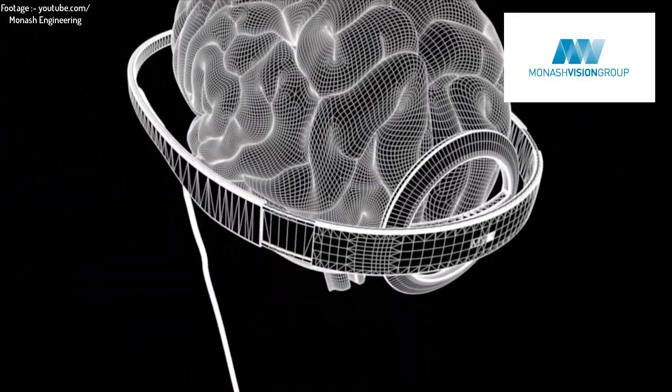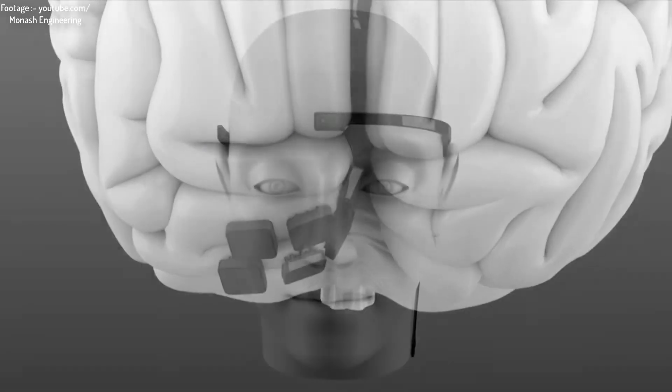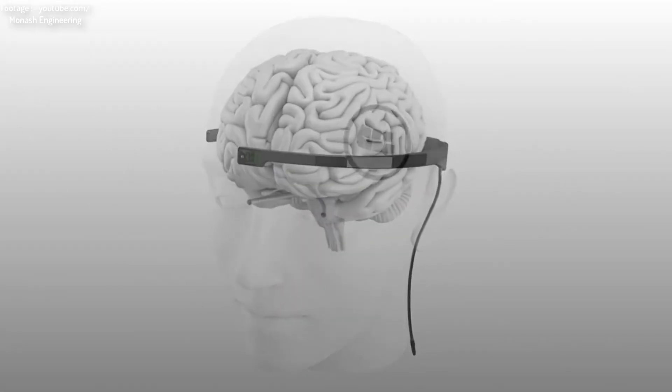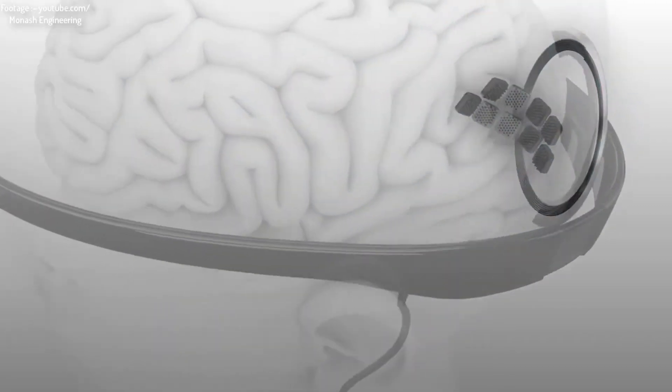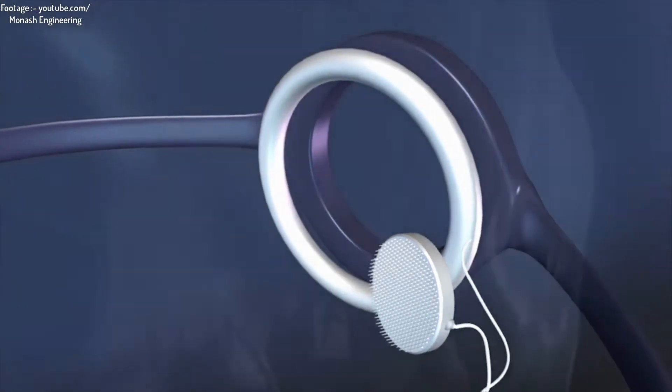A Monash Vision Group is developing Gennaris, a bionic vision system which restores functional vision for people who acquired retinal diseases. Gennaris has been designed to bypass damage to the eye and optic nerve to restore functional vision to people who have lost their sight through traumatic injury and conditions such as glaucoma and acquired retinal disease.